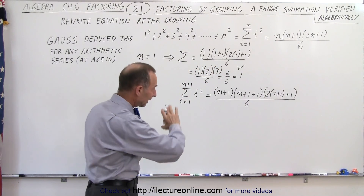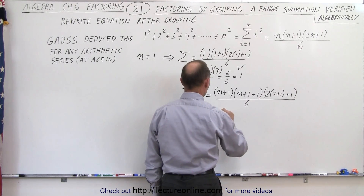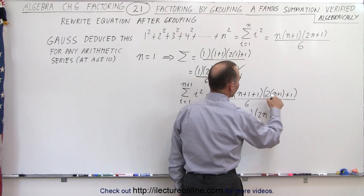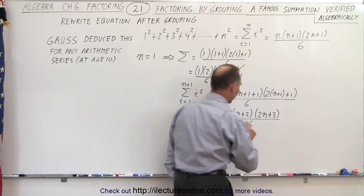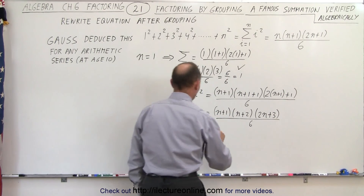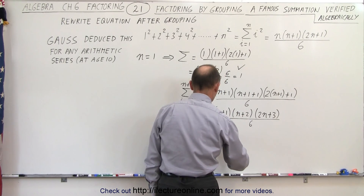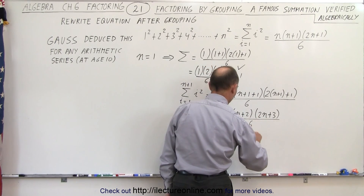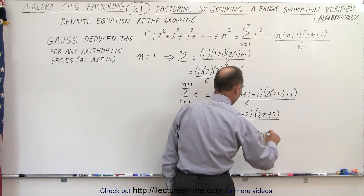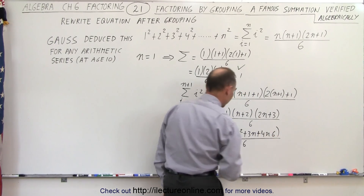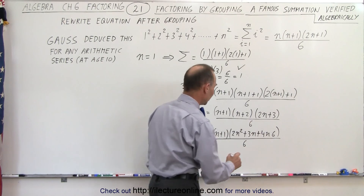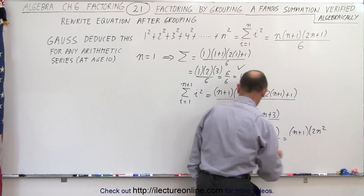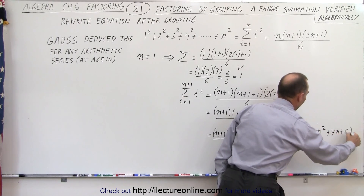Let's go ahead and clean it up a little bit. This can be written as n plus 1 times n plus 2 times 2n plus 3, all divided by 6. Now let's multiply all that out. We get n plus 1 multiplied by n times 2n, which is 2n squared, plus n times 3, which is 3n, plus 2 times 2n, which is 4n, plus 2 times 3, which is 6, all divided by 6. Notice we have a common term: 3n plus 4n is 7n, so this can be written as n plus 1 times the quantity 2n squared plus 7n plus 6, all divided by 6.